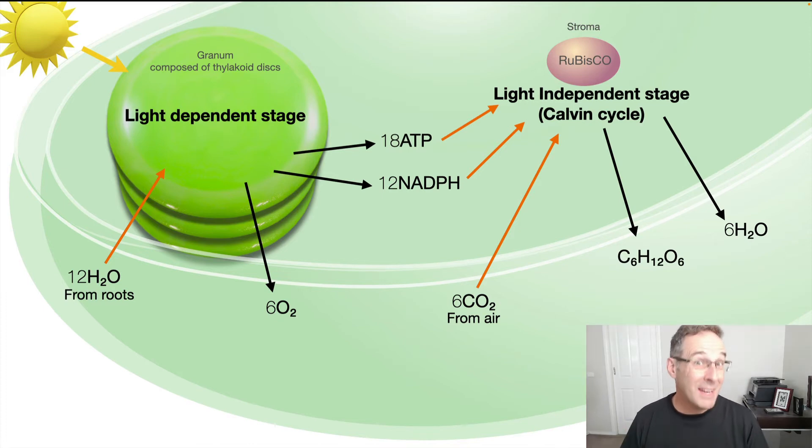They show the inputs to each of the stages. So the light-dependent stage, the only input, apart from sunlight, is water. And the water comes to the chloroplast, to the leaves, through the xylem, which comes from the roots. So the water travels up the roots, right up the stem, to the leaf. And that's how the water gets into this process. The 18 ATP and the 12 NADPH are the product of the light-dependent stage. And they go into the light-independent stage.